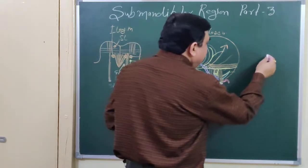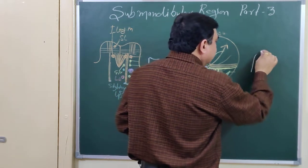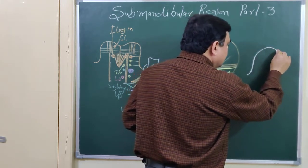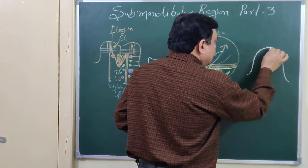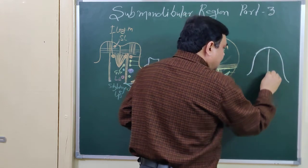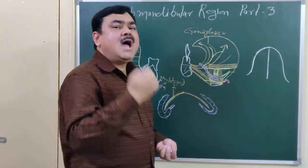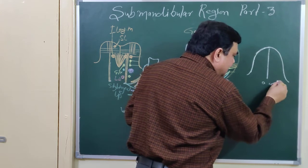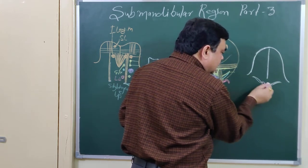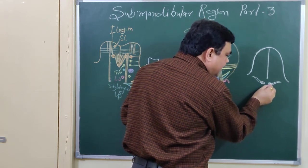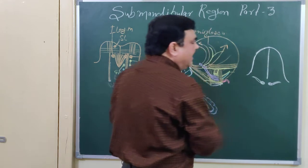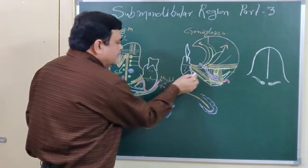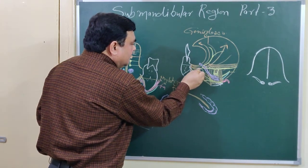From the deep part, the duct arises. The length of the duct is 5 centimeters and it opens on the summit of the sublingual papilla. If you see the tongue, here is the frenulum of the tongue, and on the lower side of the tongue here is the sublingual papilla where the duct opens.